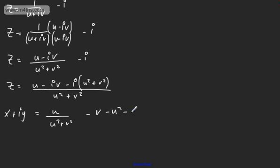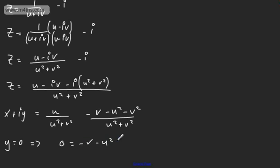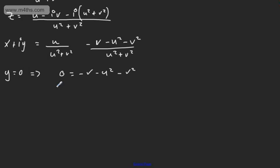Writing Z as X plus iY and getting a common denominator, we split into real and imaginary parts. The real part is U over U squared plus V squared, and the imaginary part is minus V minus U squared minus V squared, all over U squared plus V squared. Since Y equals 0, the imaginary numerator equals zero, giving us: 0 equals minus V minus U squared minus V squared, which rearranges to U squared plus V squared plus V equals 0.